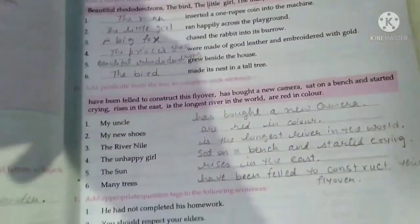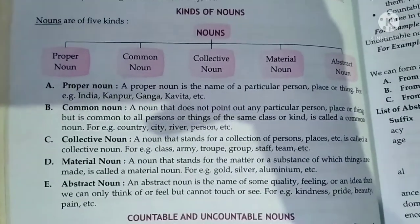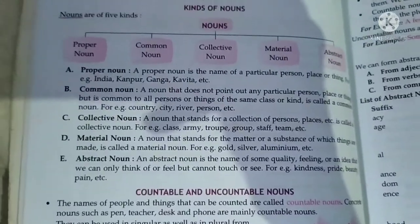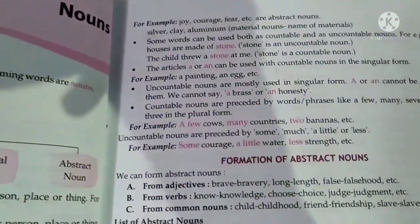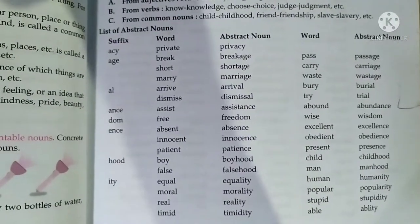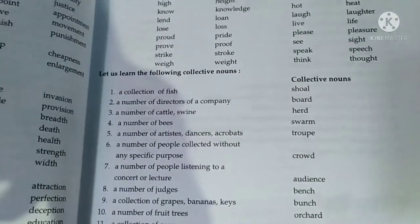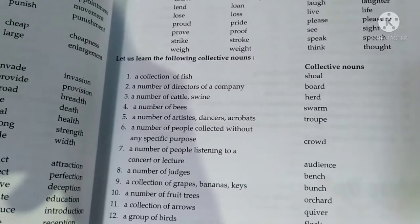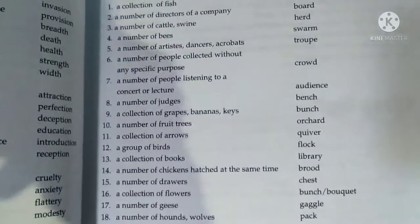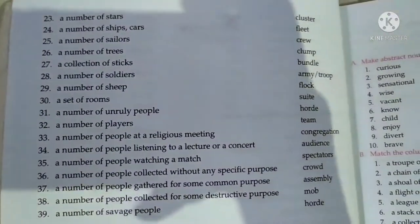Read about nouns and the kinds of nouns — there are five: proper, common, collective, material, and abstract noun. Countable and uncountable nouns are also there, but when we ask how many kinds of nouns there are, only five are there. Formation of abstract nouns — these are very important, please learn all of these. Collective nouns are also important: a school of fish, a number of dictionaries, a company, a herd of cattle, a bunch of grapes, a quiver of arrows — each and everything you learn.